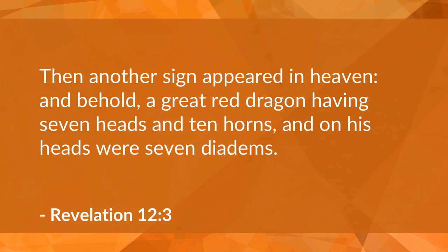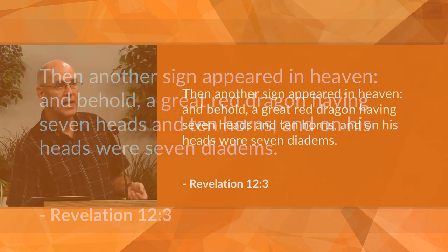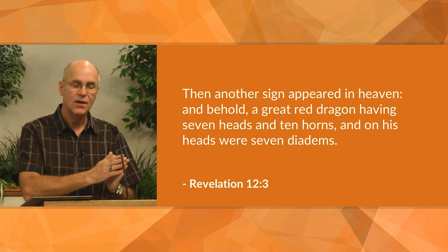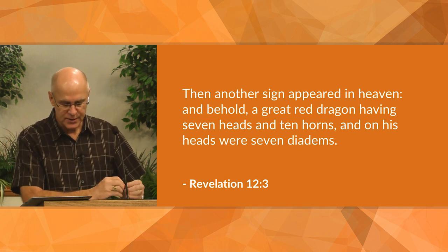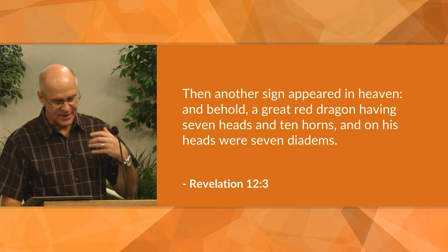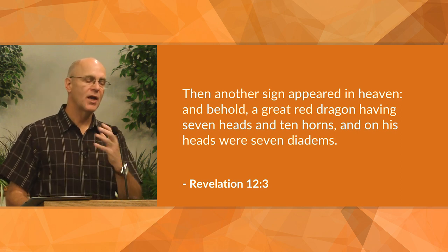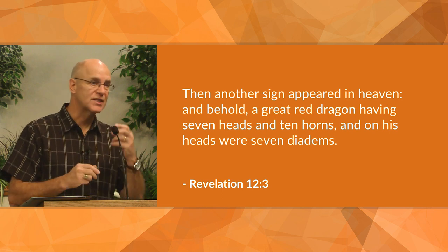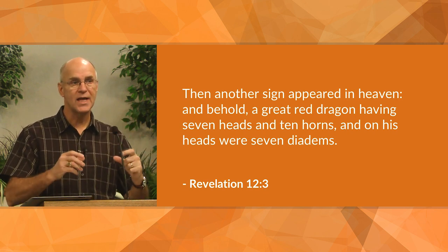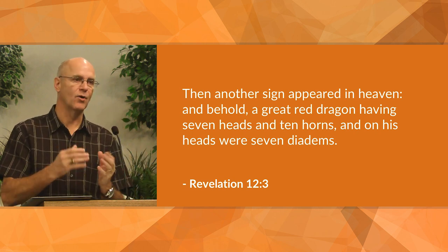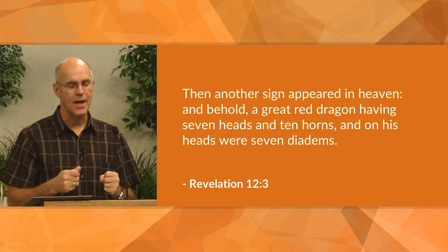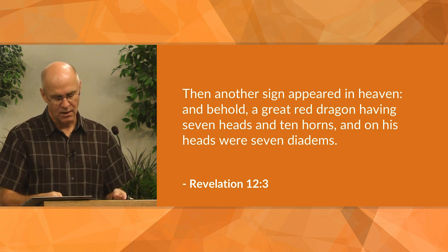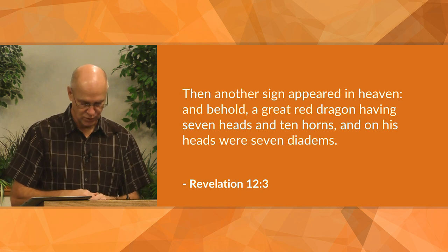Then he says in verse 3: 'Then another sign appeared in heaven, and behold, a great red dragon having seven heads and ten horns, and on his heads were seven diadems.' The red dragon represents Satan. The seven heads represent world domination. The ten horns represent complete destructive power. The seven crowns symbolize rule — not victory, but rule. Remember the numbers we've talked about: number seven is a number that is complete, number ten is a mature, dominating number. We're always using these numbers to demonstrate the extent of the power, the extent of the domination, the extent of the corruption.